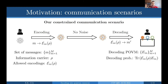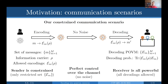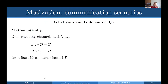Bob doesn't change in this modified scenario — he's still all-powerful and can do any kind of POVM and any kind of decoding. So the receiver is all-powerful, the channel is noiseless for simplicity of presentation, and the sender is constrained: she can only prepare states achievable from the given information carrier rho by applying a subset of channels with some property.